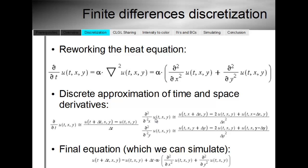We get that the second derivative of u with respect to x is: u at x plus delta x, minus 2 times the current u at xy, plus u in the previous block — all divided by delta x squared. The same formula applies for the y coordinate. This is a discrete approximation of the continuous value of the second partial derivative.